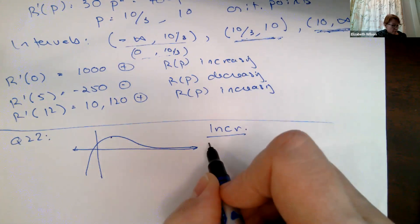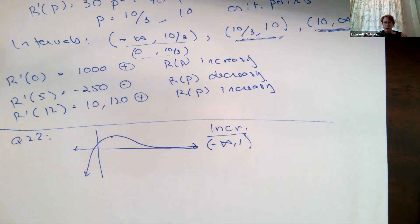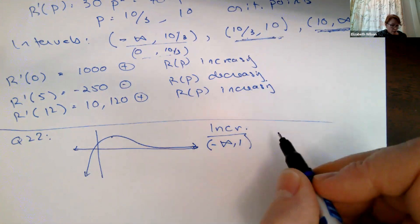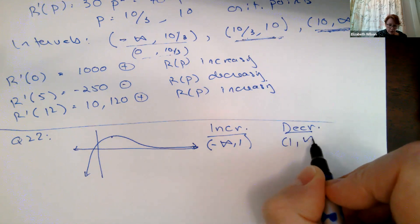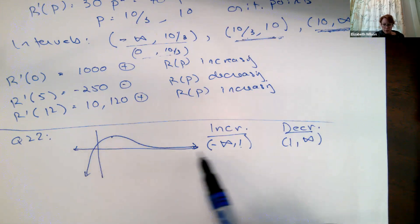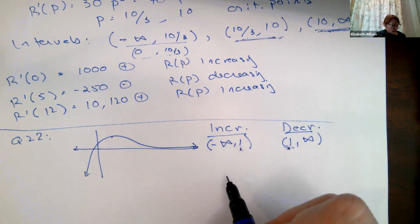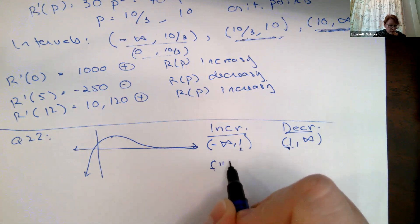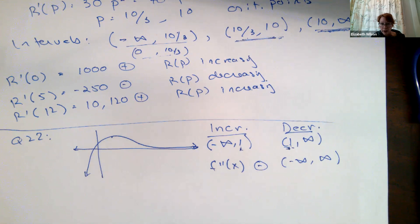For question 22: it's increasing from minus infinity to 1, then decreasing from 1 to positive infinity. The boundary point is shared — it stops increasing at 1 and starts decreasing at 1. For the second derivative, I believe it's negative the whole time — the entire graph is concave down. For question 24, the graph has a little blip and then passes over, with what looks like an asymptote.